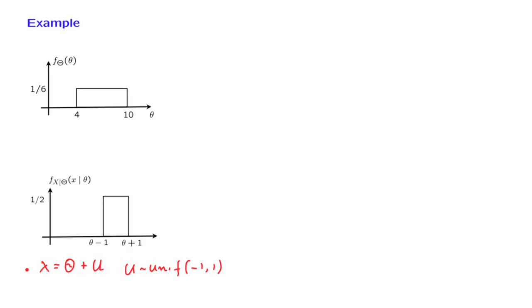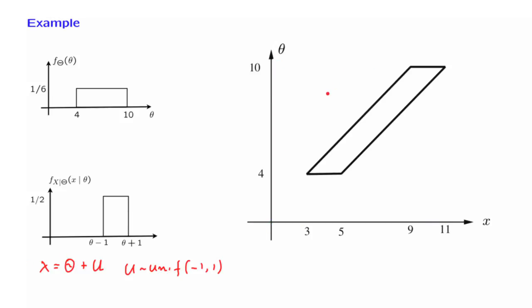In Bayesian estimation, the first step is always to put our hands on the posterior distribution of theta. And to find the posterior, we can start by first finding the joint. So let us look at the x theta plane. That's where the joint distribution is going to live. And our first step will be to locate those values of x and theta that are possible given our description.